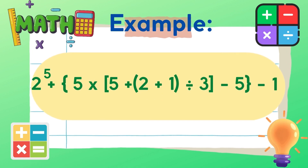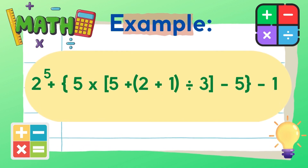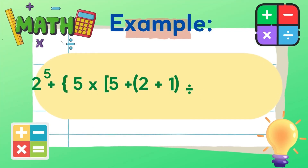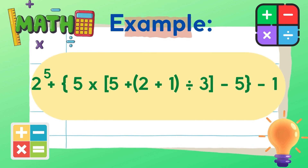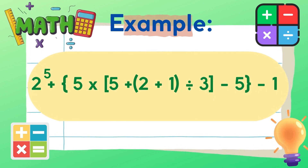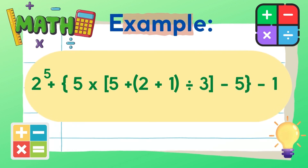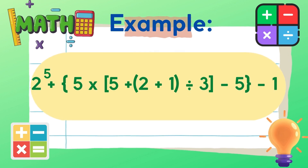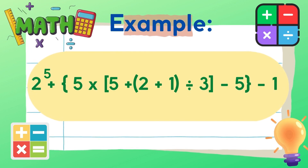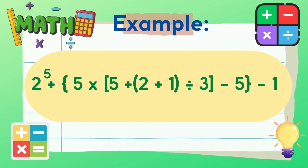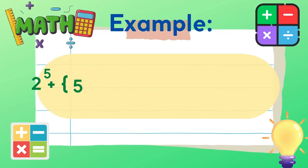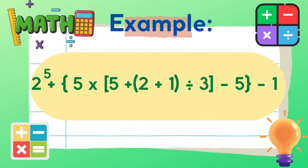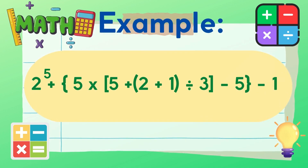2 raised to 5, plus the quantity of 5 times the quantity of 5 plus the quantity of 2 plus 1, then divided by 3, and after that minus 5, then finally minus 1.